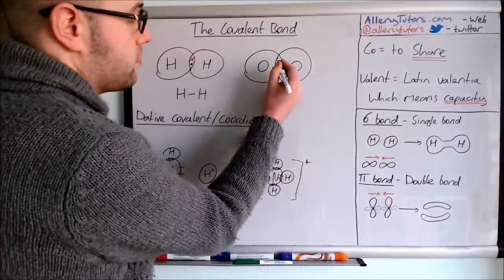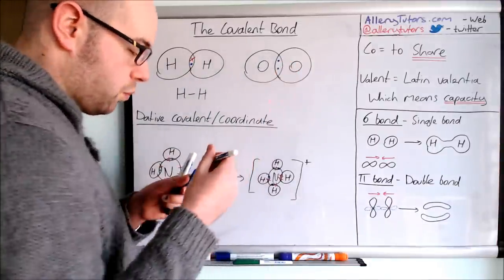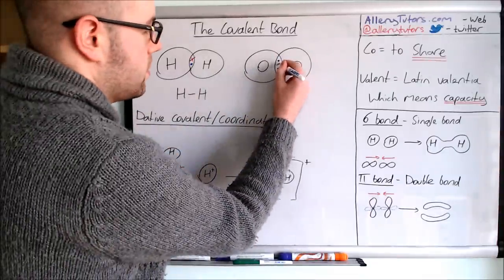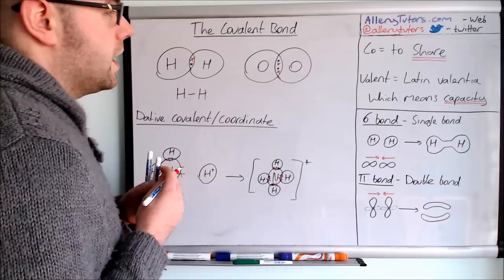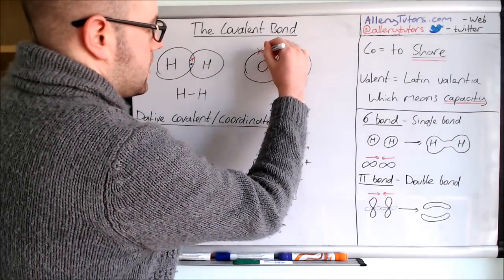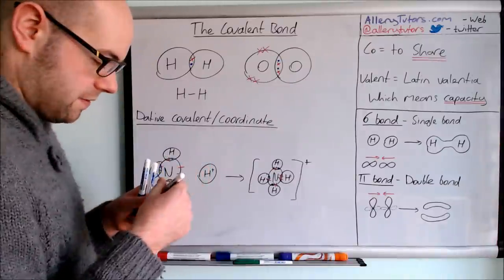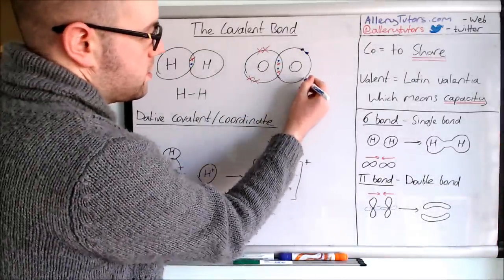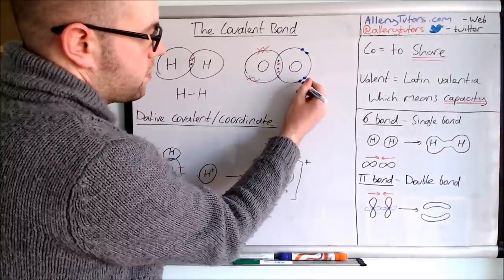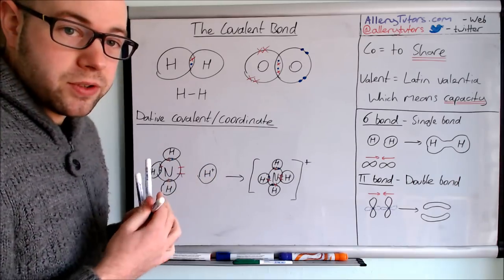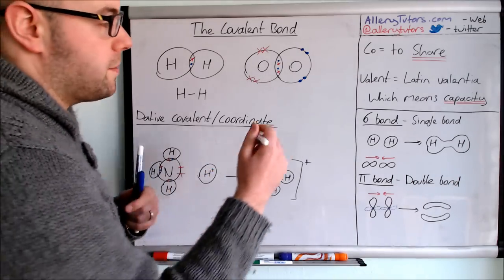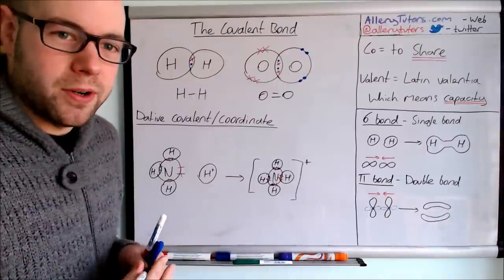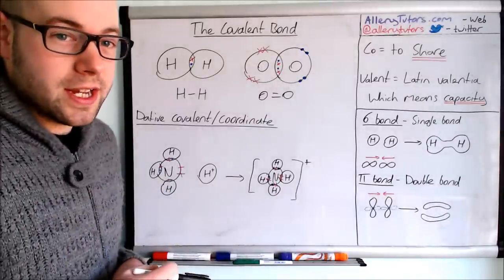The blue dots represent one oxygen atom and the crosses represent electrons from the other oxygen atom. Oxygen has six electrons in total. By doing this, you can see both oxygens now have a full shell of electrons, making them energetically stable, and we draw it as a double bond. Pretty straightforward — this is GCSE-level content.